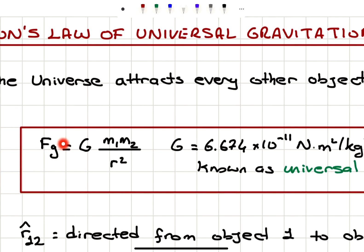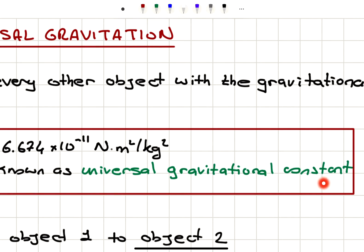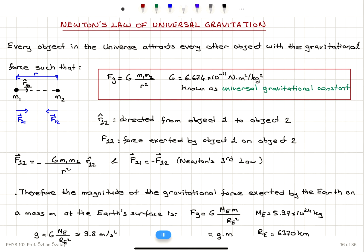The force must come out in Newtons. The Newton·meter² divided by kilogram² units work out correctly: meter squares cancel, kilogram squares cancel, and the force comes out in Newtons as expected. The constant G is known as the universal gravitational constant, and this is Newton's law of universal gravitation.